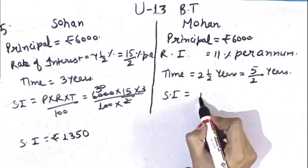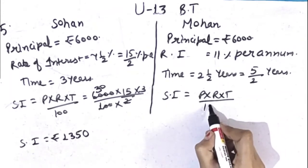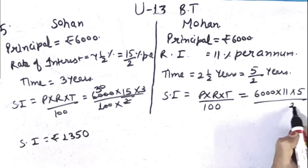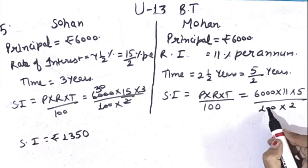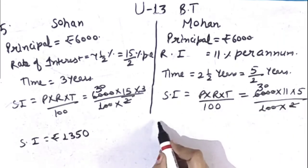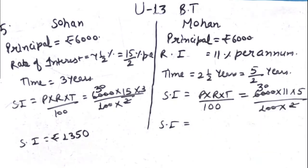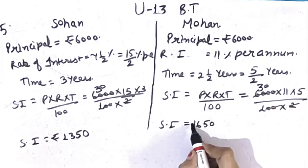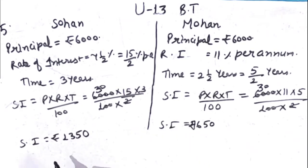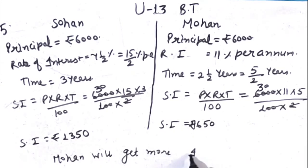For Mohan: simple interest formula is principal × rate of interest × time ÷ 100. Principal is 6,000, rate of interest is 11, time is 5 by 2, divided by 100. Cancellation: 2 zeros cancel, 2 cancels with 30. Multiplying: 11 × 5 is 55, 55 × 3 is 165, with zero gives 1,650. So simple interest for Mohan is Rs.1,650. Comparing both cases, simple interest is more for Mohan. Write: Mohan will get more interest.